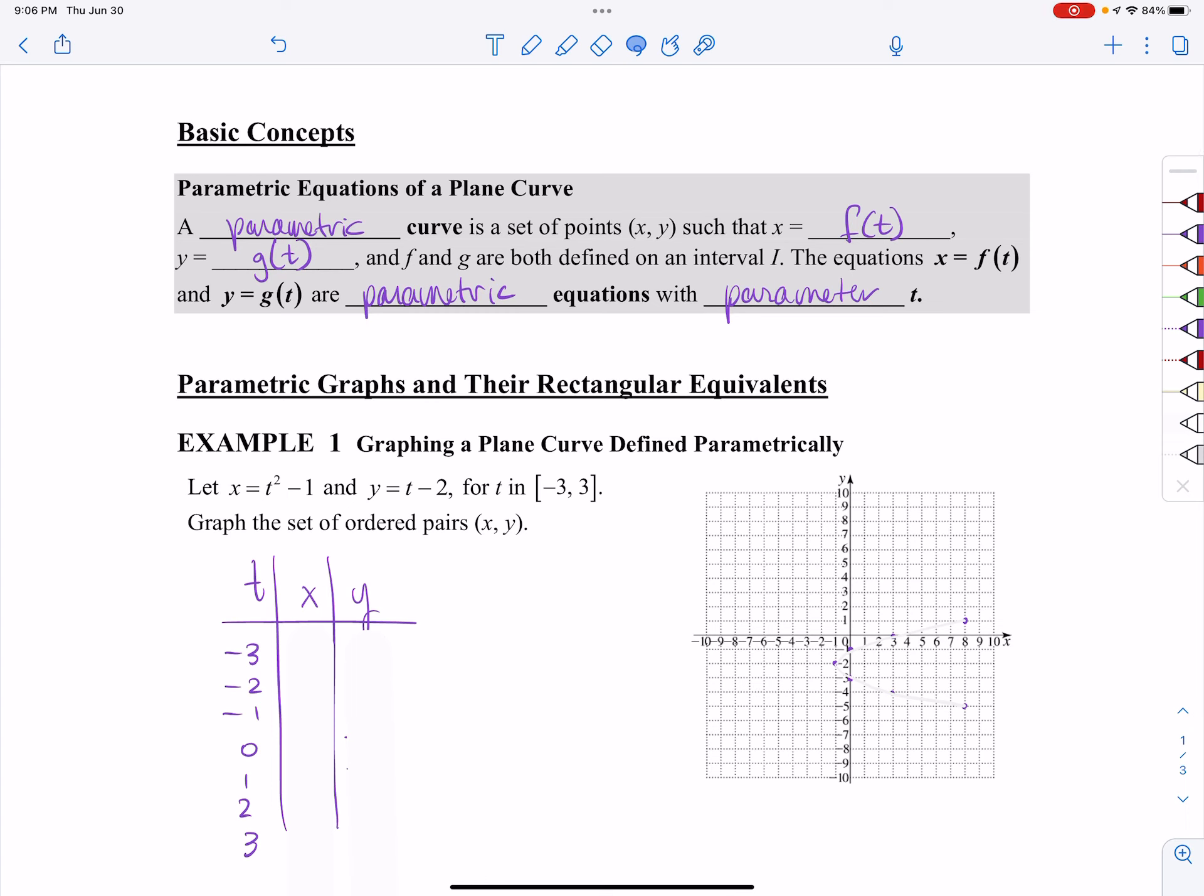A parametric curve is a set of points x, y, such that x equals f of t and y equals g of t. f and g are both defined on a certain interval. The equations x and y are parametric equations with the parameter of t.